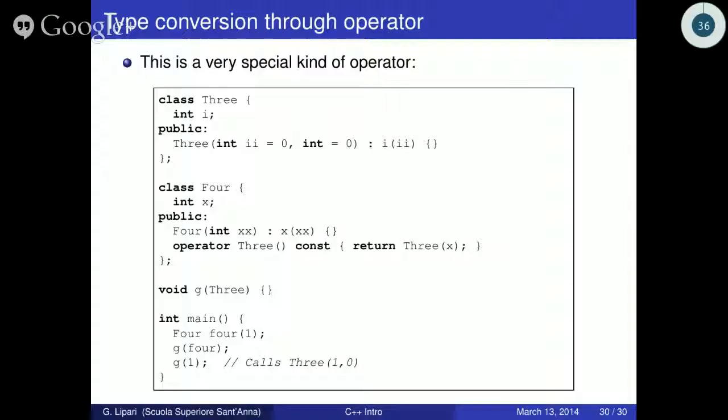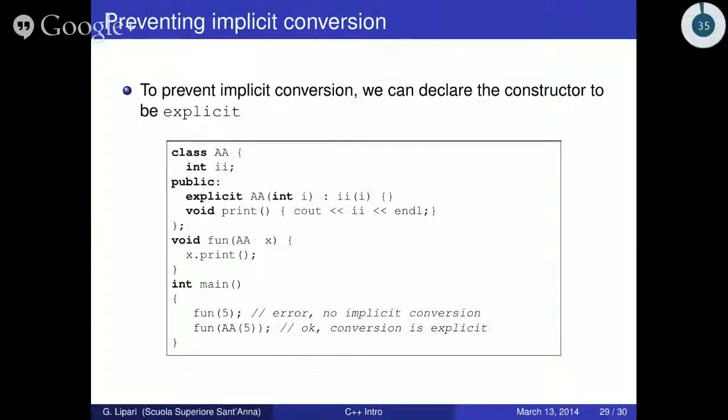This is the second way of converting. You will probably not need to use this kind of thing too much, but it is just to let you know in case you find some strange code. Also remember this explicit keyword, because it can save you from some very stupid errors — catching this kind of error is very difficult. So please use explicit when you have a constructor which takes just an integer or a very basic kind of data type.